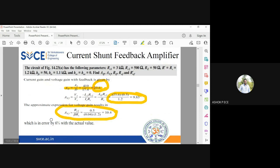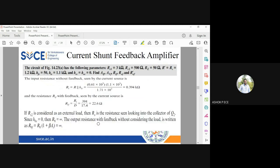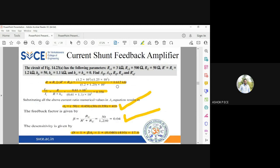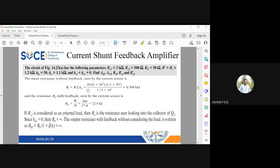Finally, ra is going to be r parallel to hie. The r value we got is 0.612k parallel to hie of 1.1k, so it will be less than 0.612k. You get 394 ohms as the input resistance. So input resistance is very low, which indicates that the circuit might draw more current from the source.